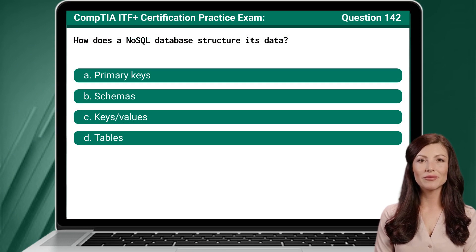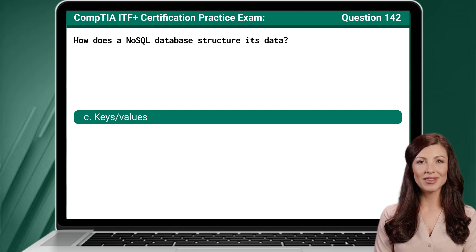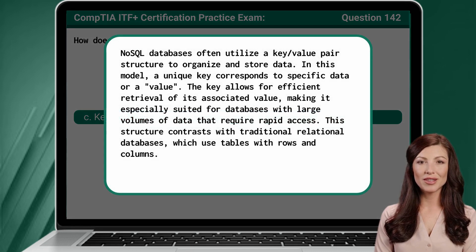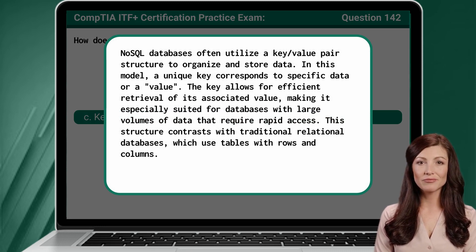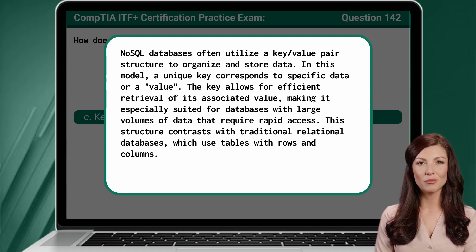Question 142. How does a NoSQL database structure its data? NoSQL databases often utilize a key-value pair structure to organize and store data. In this model, a unique key corresponds to specific data or a value. The key allows for efficient retrieval of its associated value, making it especially suited for databases with large volumes of data that require rapid access. This structure contrasts with traditional relational databases, which use tables with rows and columns.